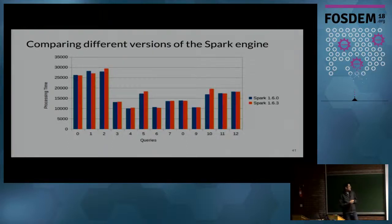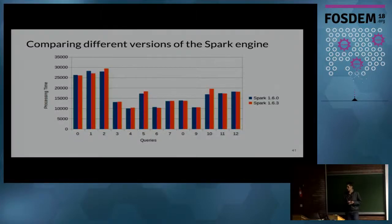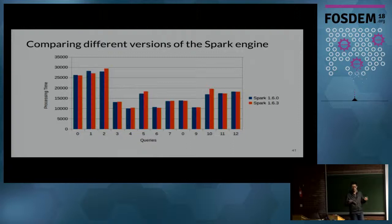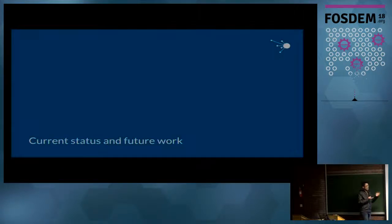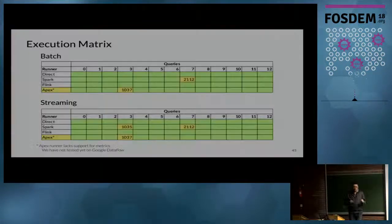Here is another example comparing two versions of the Spark engine — version 160 versus 163 — to check for regressions. Same code base. You can see that for some queries there are some differences, but overall they are quite similar. If we see something really, really different, that's a signal.